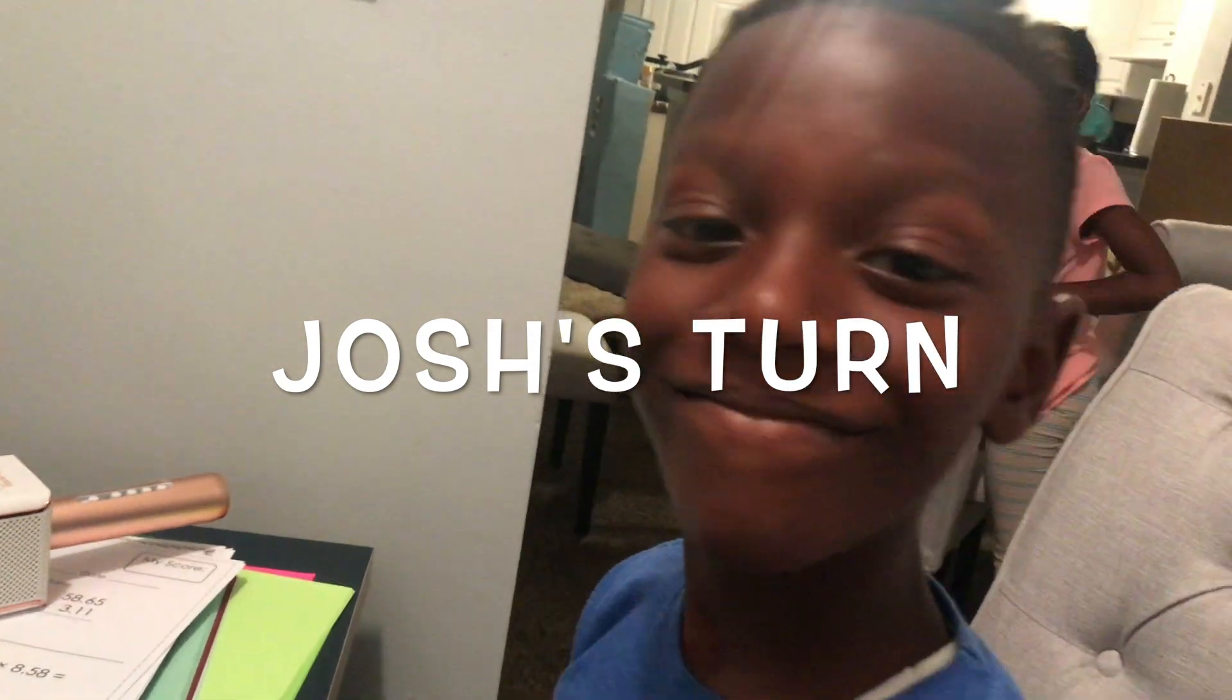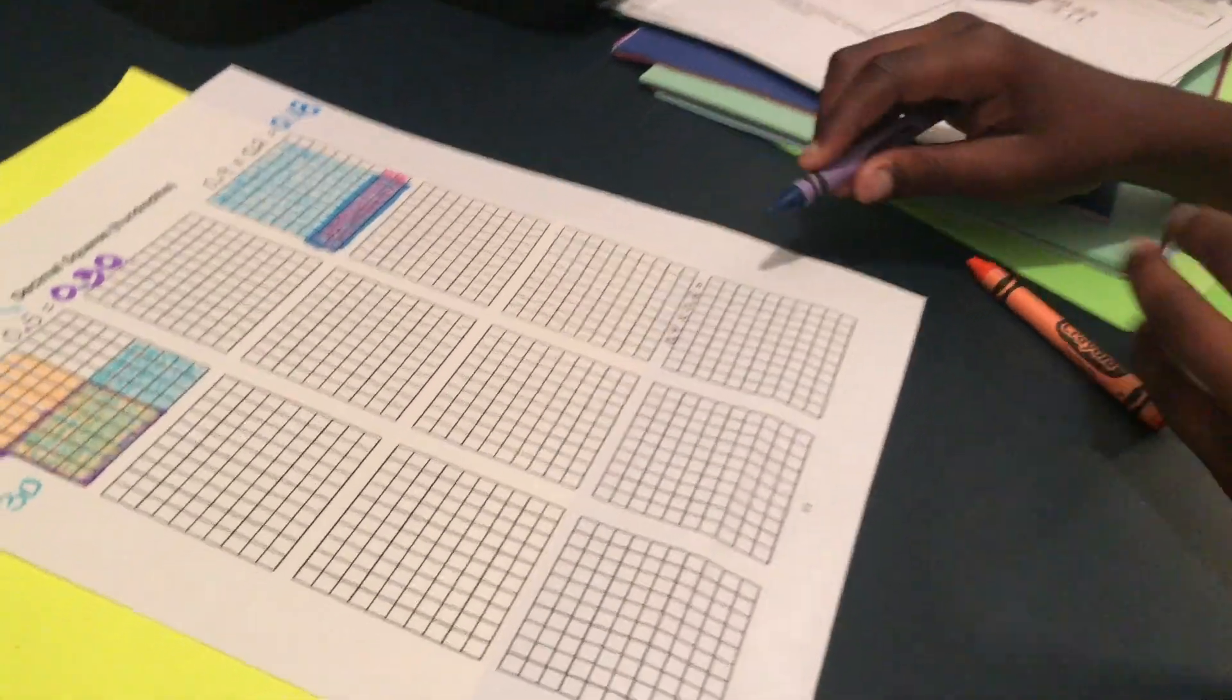Again, I multiplied nine tenths shaded in by two tenths shaded that in and my answer is where they overlap. And notice how eighteen hundredths is smaller than nine tenths and two tenths. So when you're multiplying two decimals your answer got smaller. And now I'm showing Mr. Joshua Ratchford. Let's see if he can take what I taught him and let's see if he can do this.